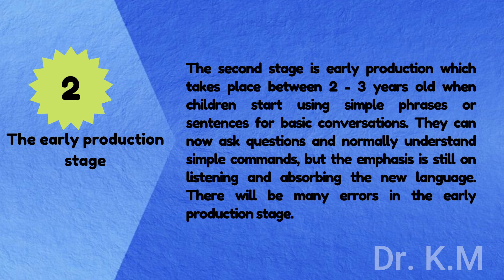The second stage is early production, which takes place between 2 to 3 years old, when children start using simple phrases or sentences for basic conversations. They can now ask questions and normally understand simple commands, but the emphasis is still on listening and absorbing the new language. There will be many errors in the early production stage.